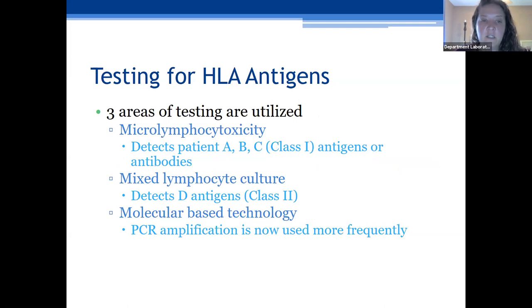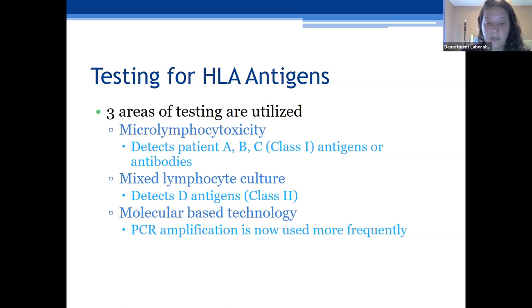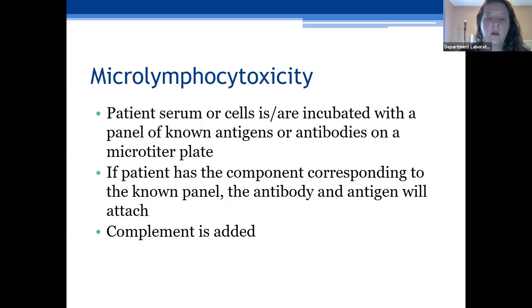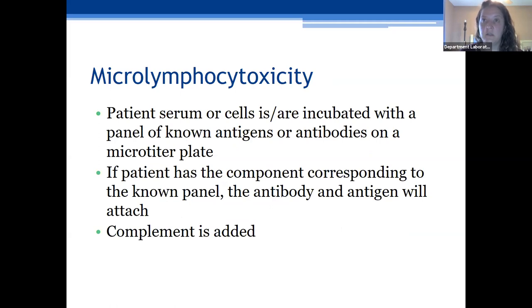There are three areas of HLA testing. The microlymphocytotoxicity test can detect your A, B, and C class one antigens. The mixed lymphocyte culture detects class two antigens. And molecular-based technology using PCR is most commonly used now in laboratories. The microlymphocytotoxicity test uses patient serum to identify HLA antibodies, or patient cells to identify HLA antigens, incubated with a panel of known antigens or antibodies — similar to the IAT panel for red cell antigens — using microtiter plates.